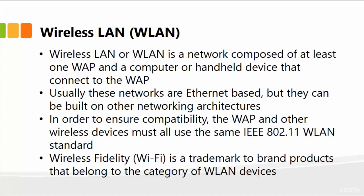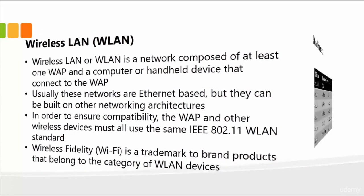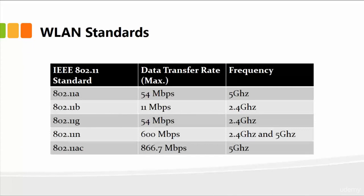Wi-Fi, also known as Wireless Fidelity, is a trademark used to brand WLAN devices. Here are some of the standards — I've put together a simple grid showing the IEEE 802.11 standards with categories a, b, g, n, and ac, along with their data transfer rates and frequencies. For example, 802.11a has a maximum data transfer rate of 54 megabits per second at 5 GHz. If you're developing your own network, you can implement any one of these standards, making sure all devices match.